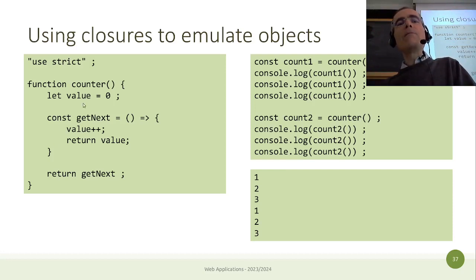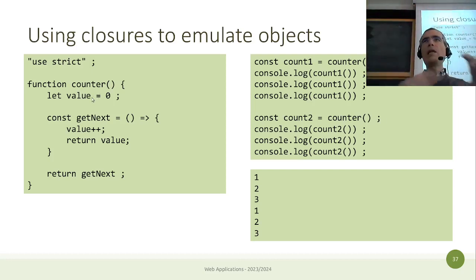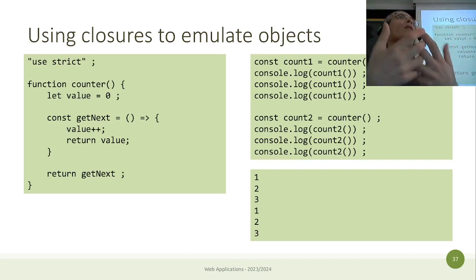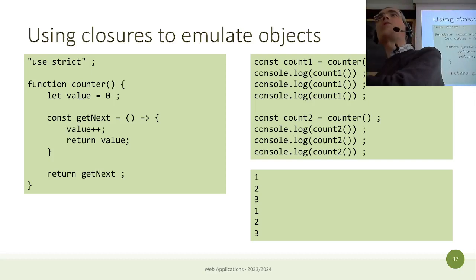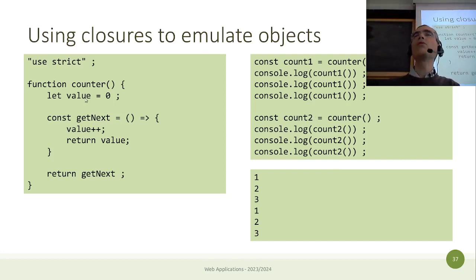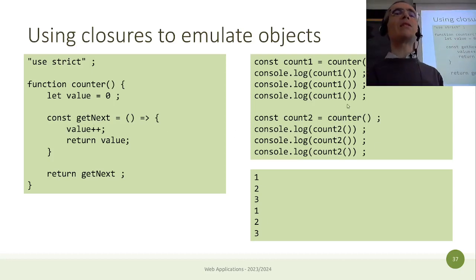If you call `counter()` again, you get a new function that has visibility into a new, separate `value` variable. Every time you call a function, a new scope is created, so variables declared inside are different from those of a previous call. You end up with two functions that operate on two different hidden values — the programmer cannot directly access either `value`, but can manipulate them by calling the respective functions.